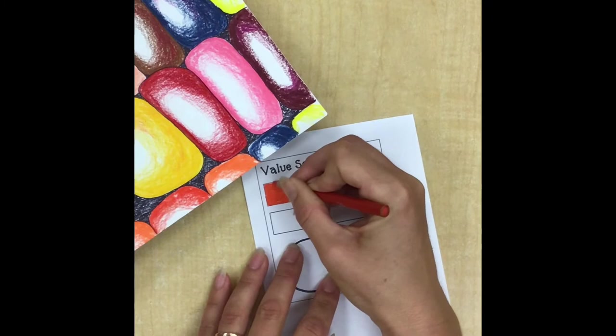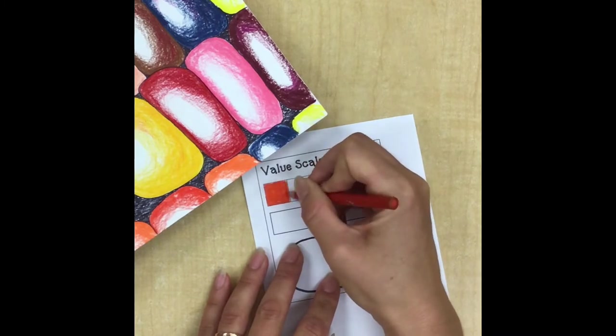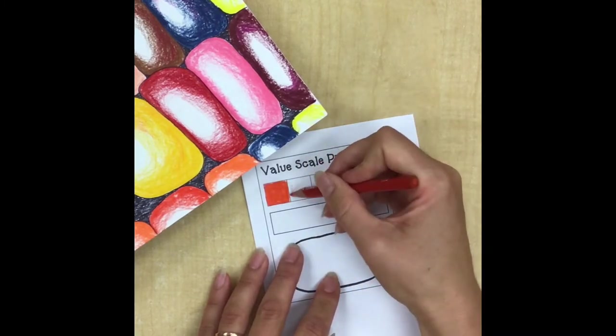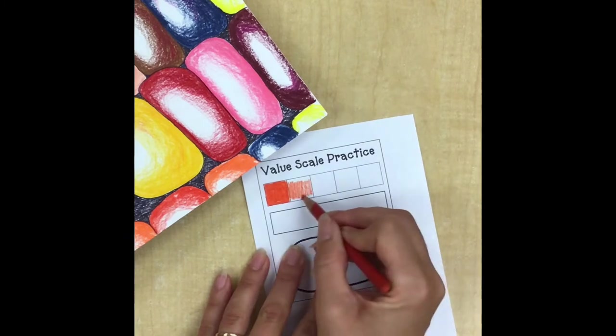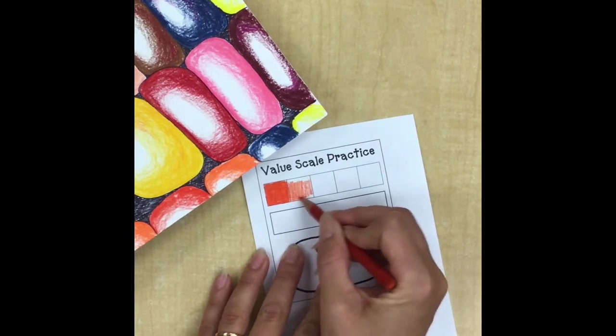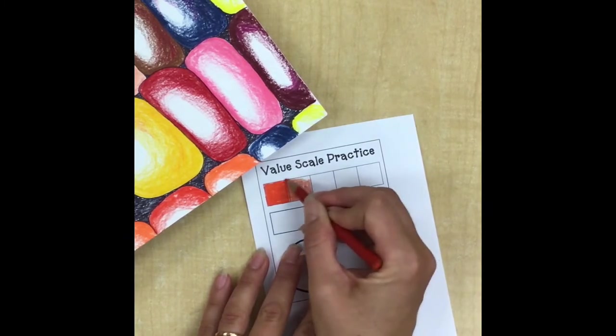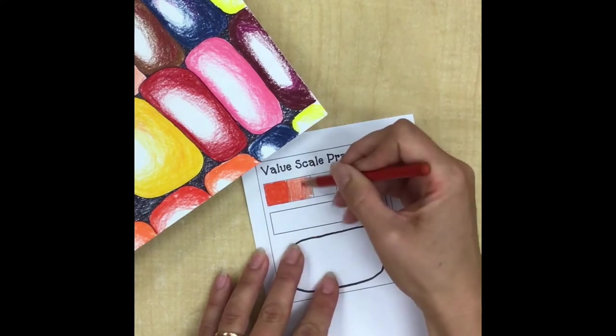Now in the next box, I'm going to still be pushing hard but not quite as hard as before. You should be able to tell a slight difference between this square and the first one - it should appear just a little bit lighter. Once again, I'm still coloring inside the lines.